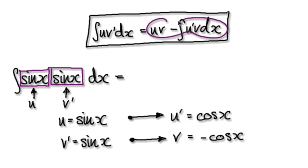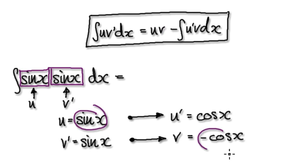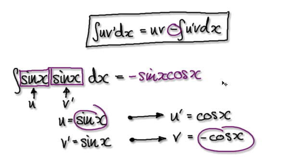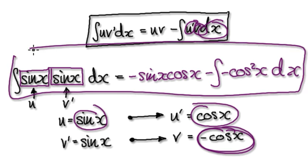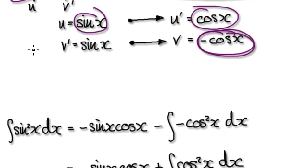So now, blindly follow the instruction here. It's saying get u times v. So that would be minus sine x cos x. And then minus the integral of - it's saying get u prime times v. So that would be minus cos squared of x. And then you've got your dx here. So this whole thing here would then become this.